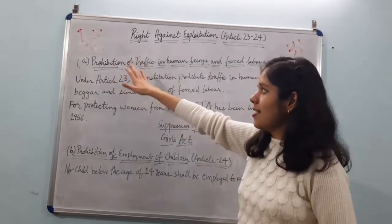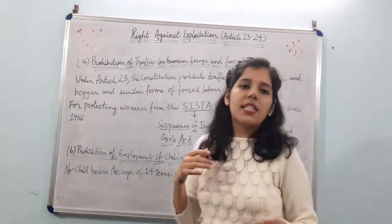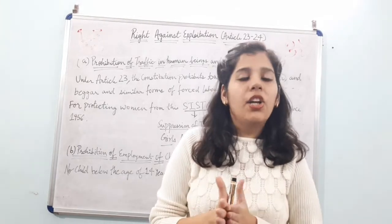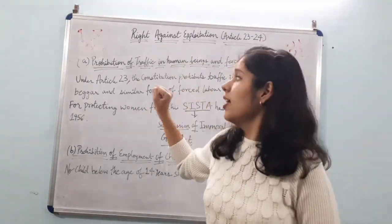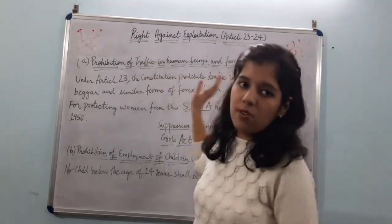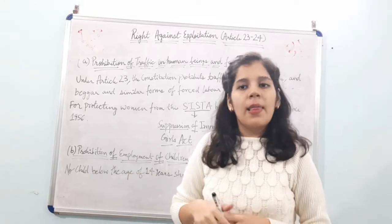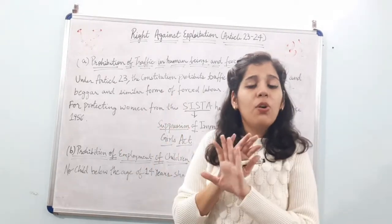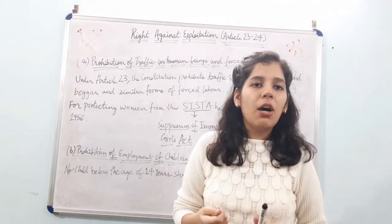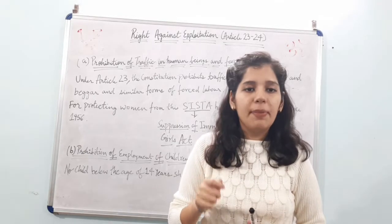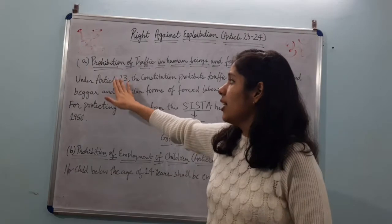Article 23 covers the prohibition of traffic in human beings and forced labor. Some students get confused when they hear the word 'traffic' and think it refers to road traffic, but that is not the case at all. Here, we are talking about human trafficking — the buying and selling of men and women.